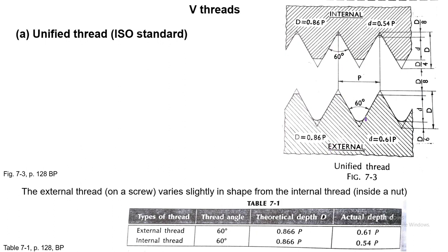The truncation is D/8. The small d, which is the distance across the thread, can be given by 0.86P or 0.61P. The external thread on a screw varies slightly in shape from the internal thread inside a nut — the thread angle is the same but theoretical depth and actual depth are slightly different. This is the ISO standard as well as BIS metric screw thread. BIS — Bureau of Indian Standards — follows the same ISO standard.